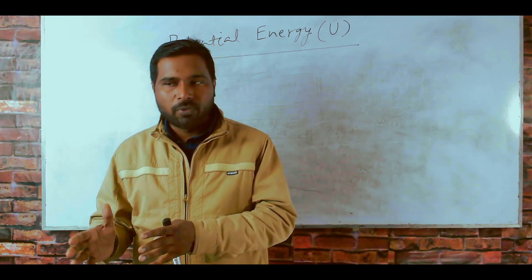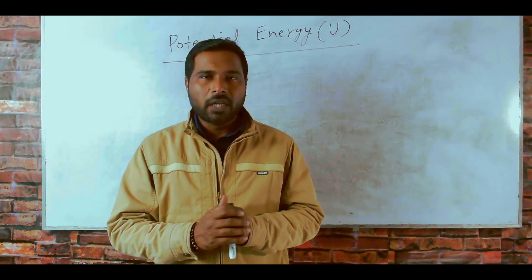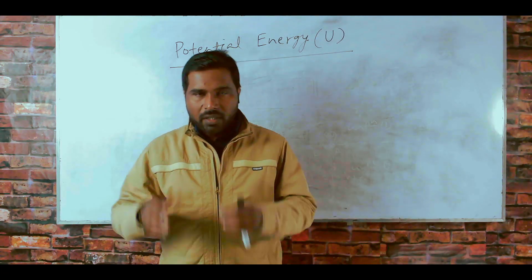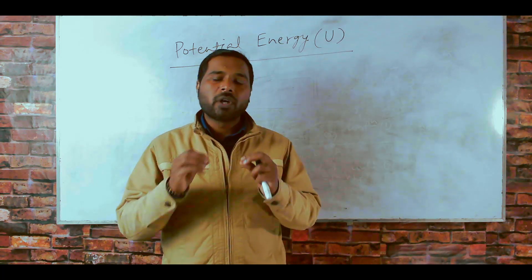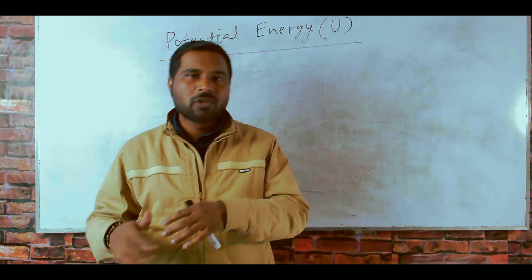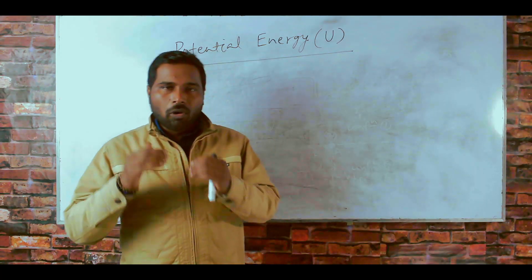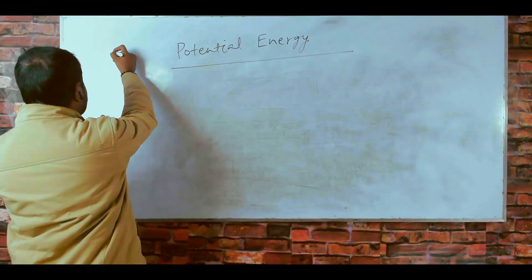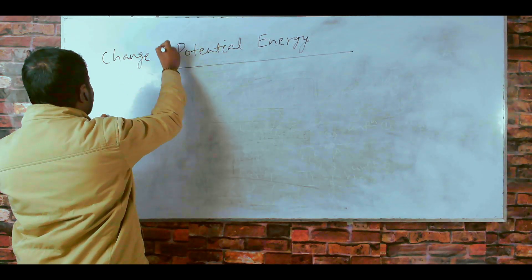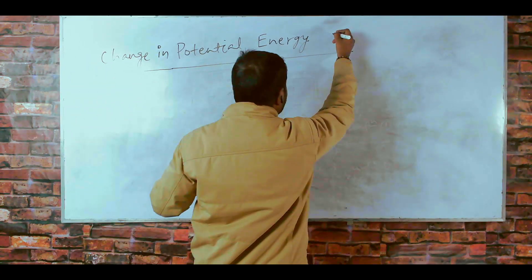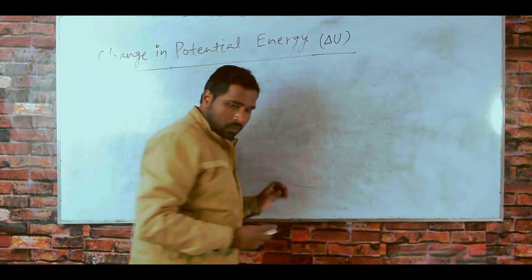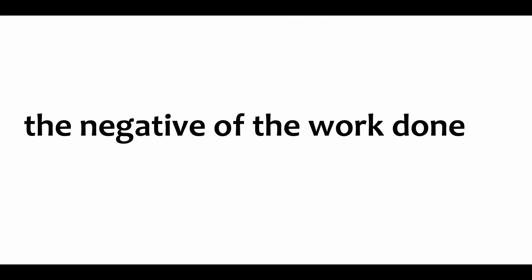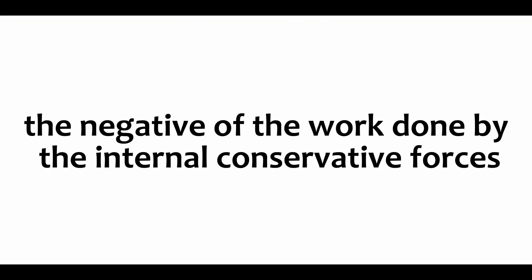Corresponding to each type of conservative force, there is a type of potential energy. In almost all books, it is the change in potential energy that is defined first. The reason is that we can only measure the change in potential energy — there is no way to know the absolute value of potential energy of a system. So, I will also define the change in potential energy first. The change in potential energy of a system corresponding to a change in configuration is defined as the negative of the work done by the internal conservative forces during the process.